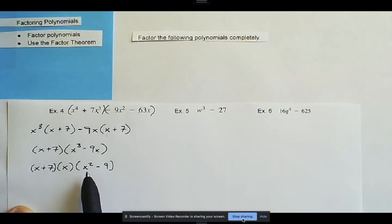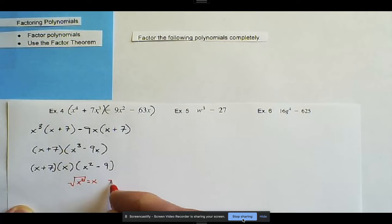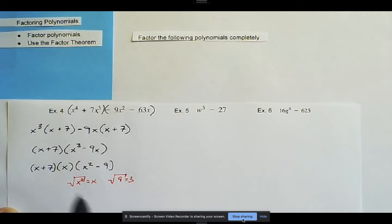And now we can see that we have two terms, and they're both perfect squares. If we take the square root of x squared, we get x, and if we take the square root of nine, we get three. So now we're left with the difference of squares, and so we can factor that one last time, and we're left with x plus seven times x, and then the difference of squares where we say x minus three, x plus three.